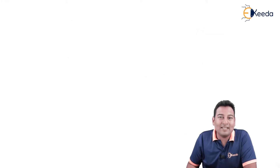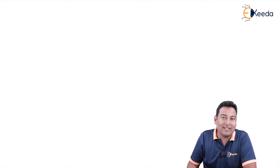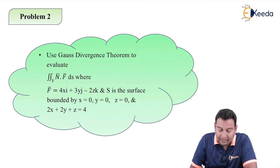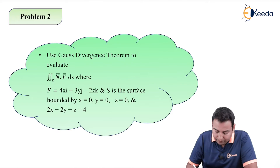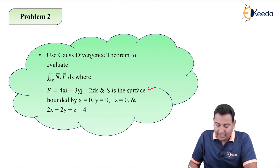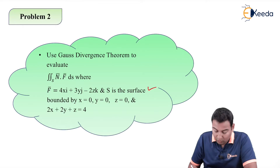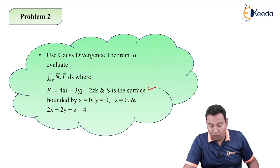In the last video we discussed one basic example of Gauss Divergence Theorem. Here also we'll be discussing one more example. The problem is: use Gauss Divergence Theorem to evaluate the double integral of n̄ · F̄ dS, where F̄ is given, and S is the surface bounded by x=0, y=0, z=0, and 2x+2y+z=4.